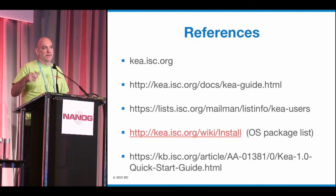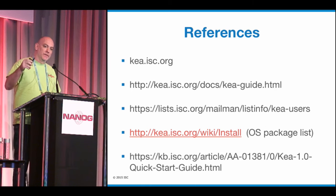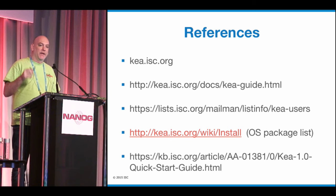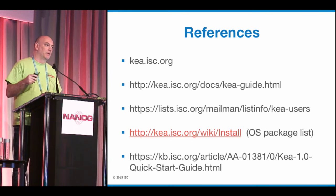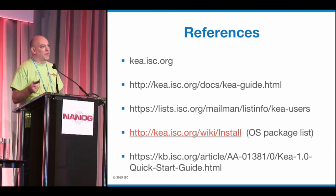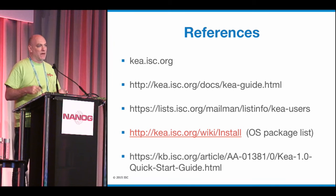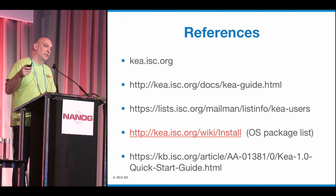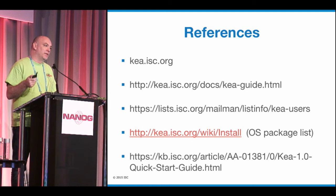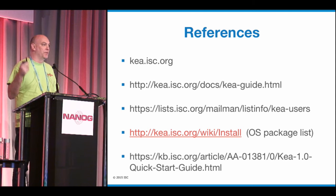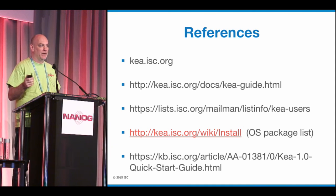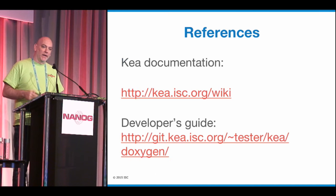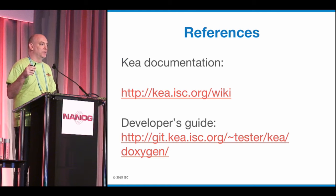For references: kea.isc.org is the main one. There's documentation there about how to actually implement. The Kea-users mailing list is highly recommended — right now because of the lower volume of adopters, you get pretty quick responses from our developers. Some operating systems have already picked up Kea — Fedora, Red Hat, a lot of the BSDs have it — so instead of installing from source, your OS of choice may already have it packaged. And there's a quick start guide. If you're going to actually develop hooks, please check out the developer's guide.